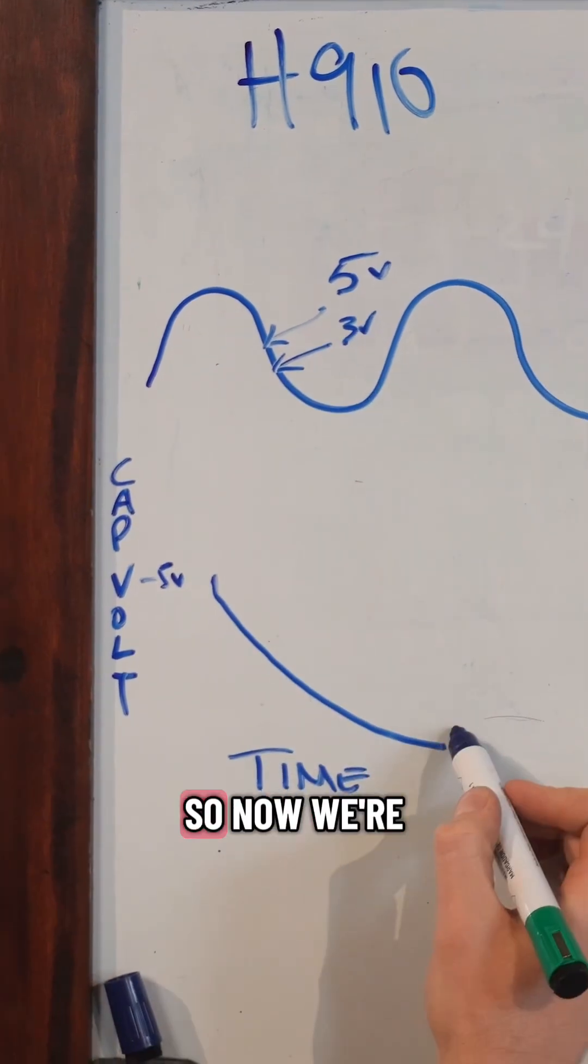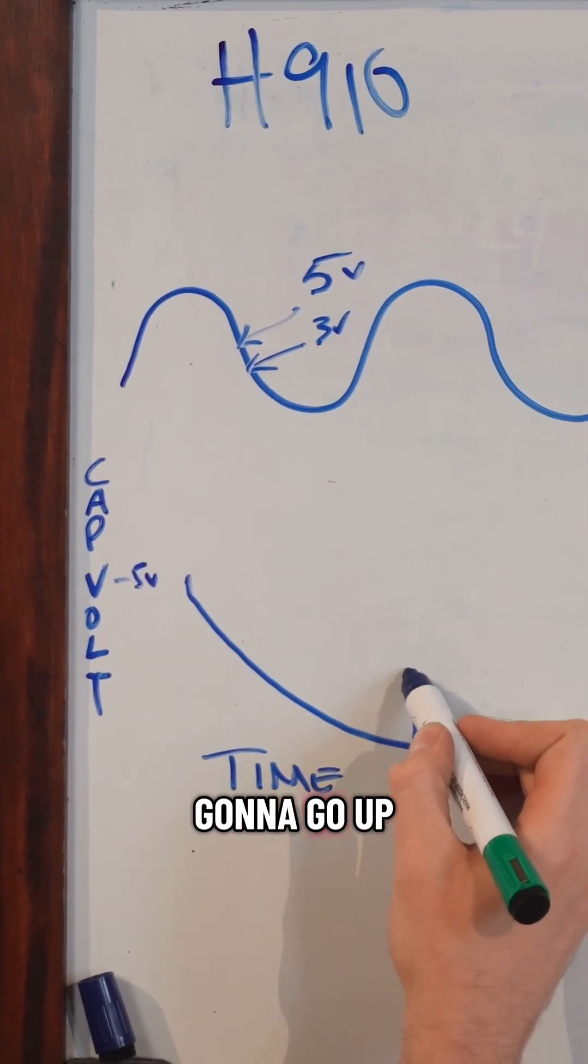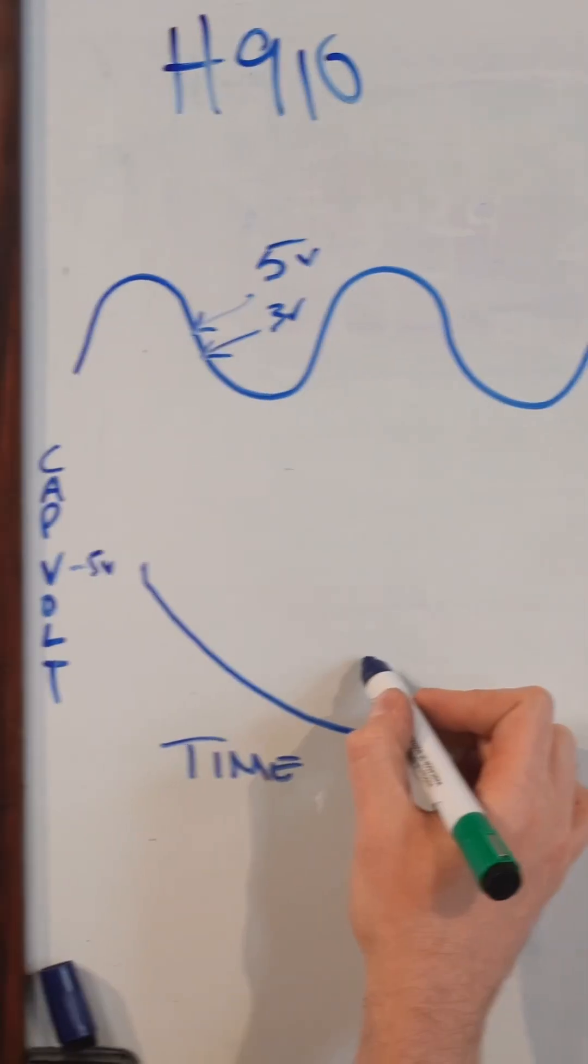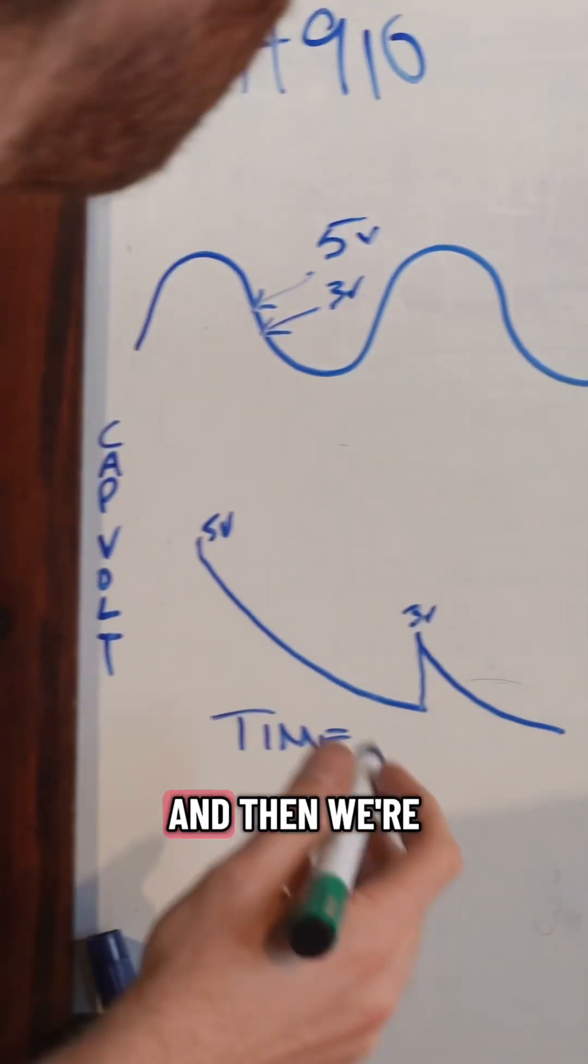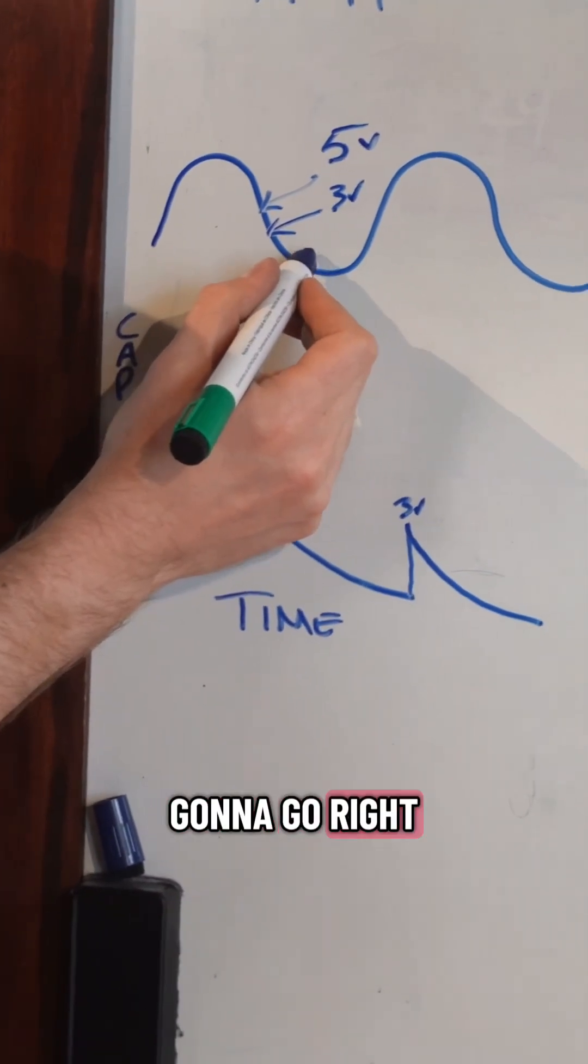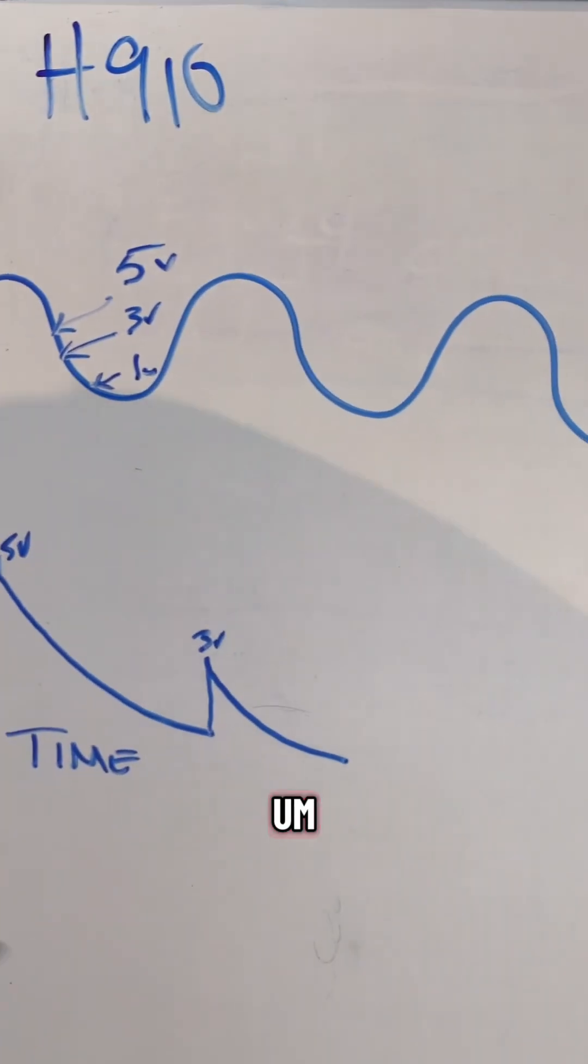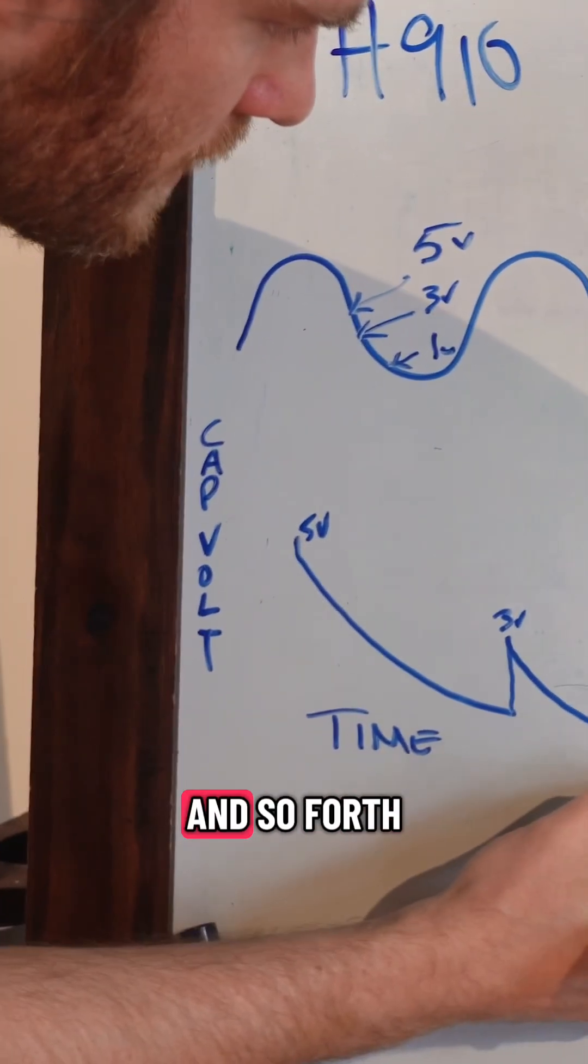Let's say this is three volts. So now we're going to go up to three volts, and then we're going to drain it again. Then we're going to go right here. Let's say this is one volt at our next sample. We're going to go up to one and so forth.